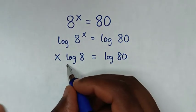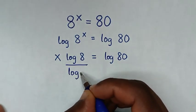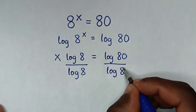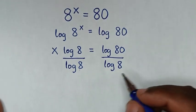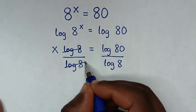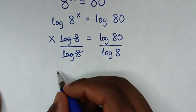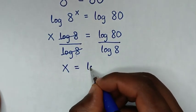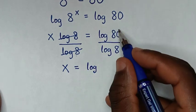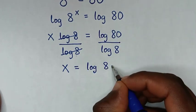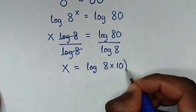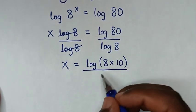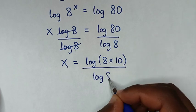Then we divide by log of 8 on both sides. So this log of 8 will cancel this log of 8. Then it will be x is equal to log of 80, which is the same as log of 8 times 10, over log of 8.